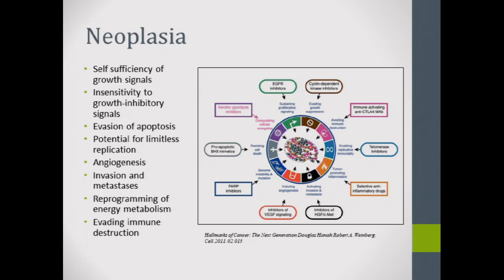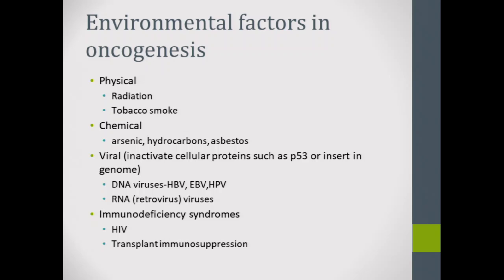It takes a lot of stuff to become a malignancy. There are environmental and physical factors that can lead to malignancy: radiation, tobacco smoke, and some chemicals like arsenic, hydrocarbons, and asbestos.